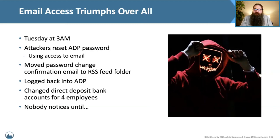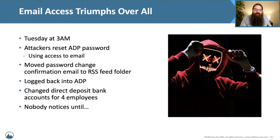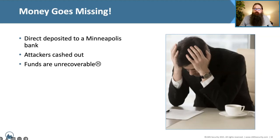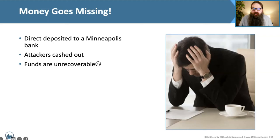Tuesday at 3am of that week, the attacker noticed they couldn't log into ADP anymore, but they still had access to the user's email. So they went to ADP, hit 'I forgot my password,' and requested a reset link. The reset link was sent to the email they controlled, they changed the password, regained access to ADP, and changed the direct deposit information for those four employees. The money was deposited to a bank in Minneapolis, the attackers cashed out, and the funds were unrecoverable. The attackers successfully stole thousands of dollars from the organization with just a couple of keystrokes.